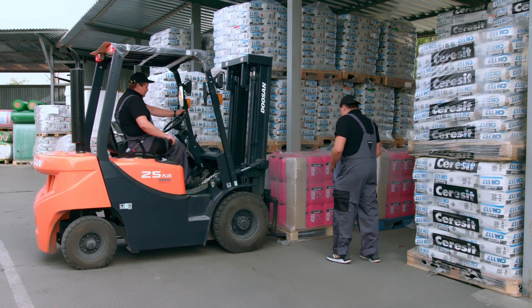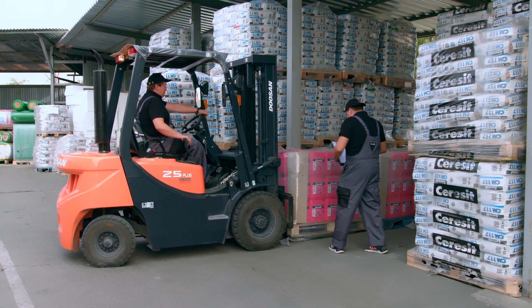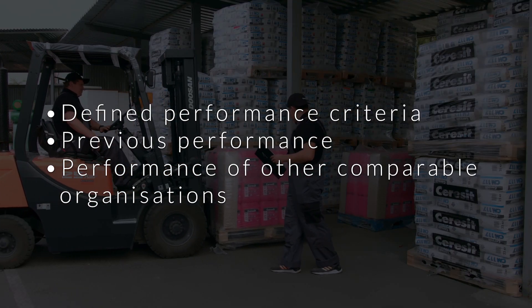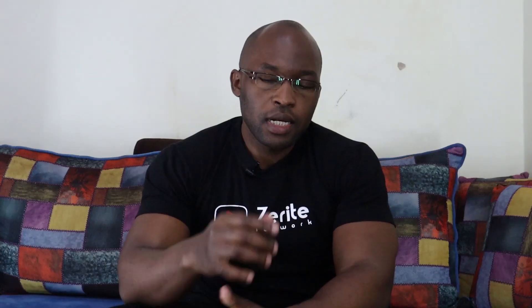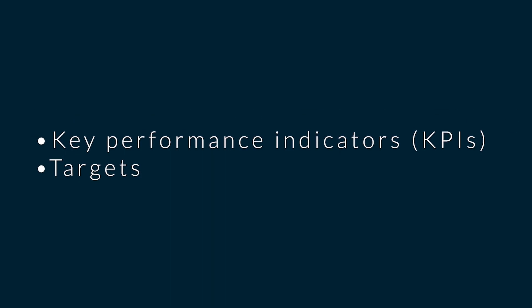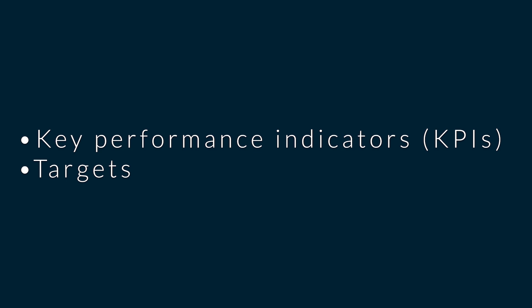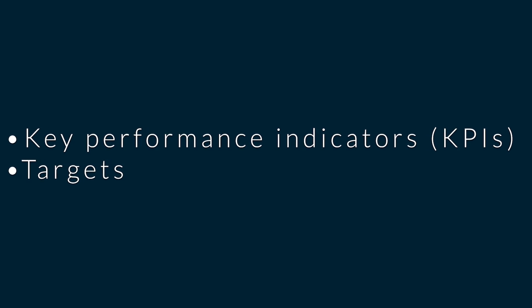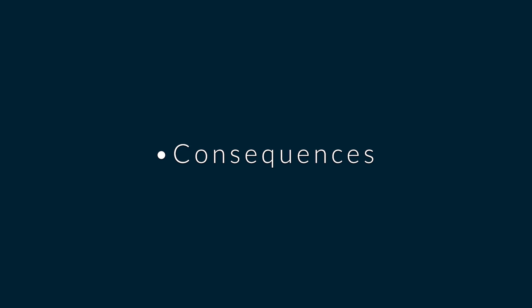When we talk about supplier performance measurement, we mean assessing their current performance against defined performance criteria, previous performance, and performance of other comparable organizations. The key components of a performance management framework are: number one, key performance indicators — what are you measuring; number two, targets — the performance level to be achieved, for example 95% on-time delivery rate; and number three, consequences — what happens if they fail to meet the target.